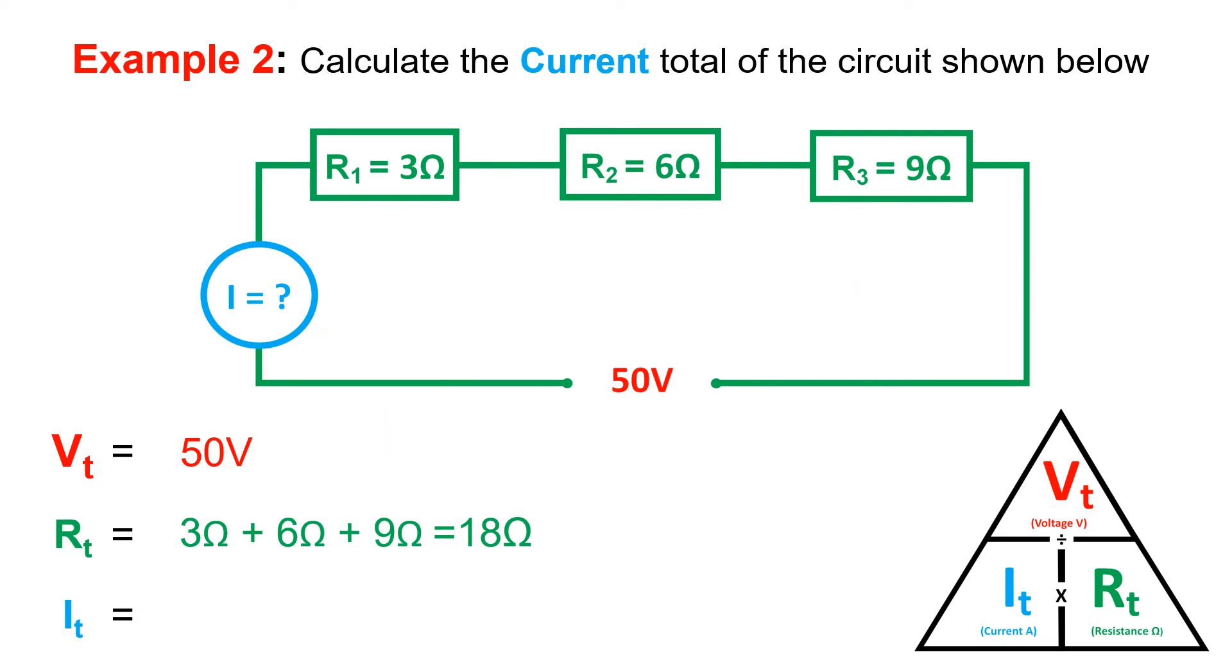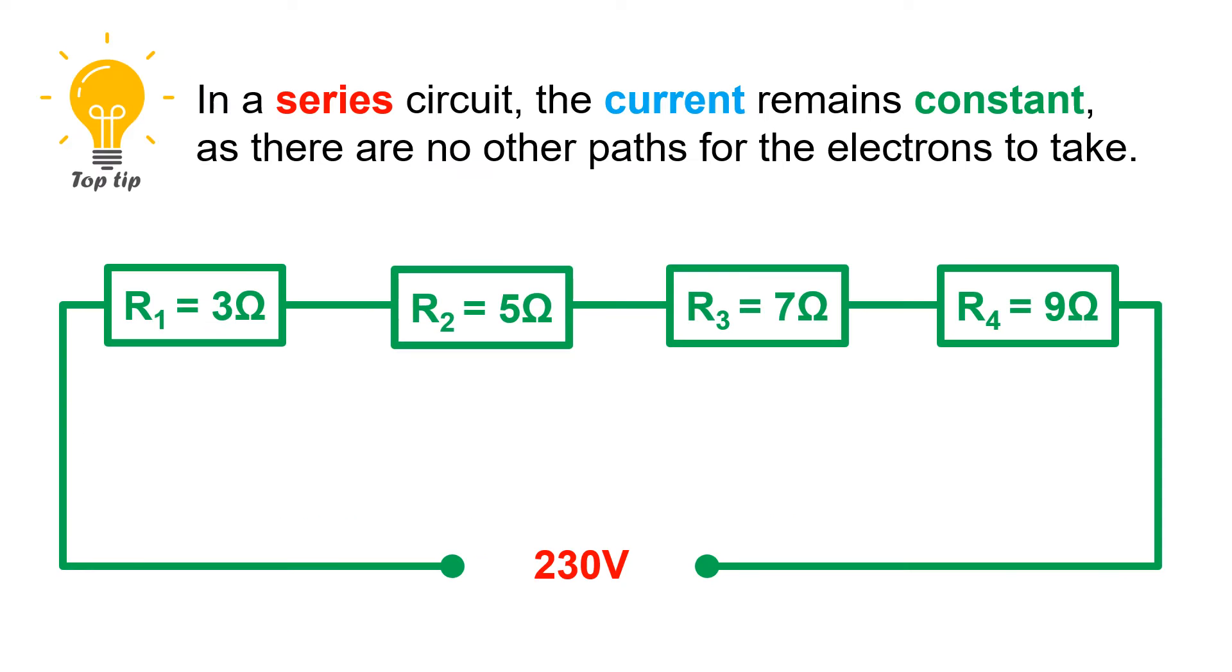We can now put that value here, and now we have all the total values for the circuit. If you haven't done it already, I want you to write down on your formula sheet that current in a series circuit remains constant, as this is very important to you being able to answer any voltage drop question on series circuits during the electrical theory exam.